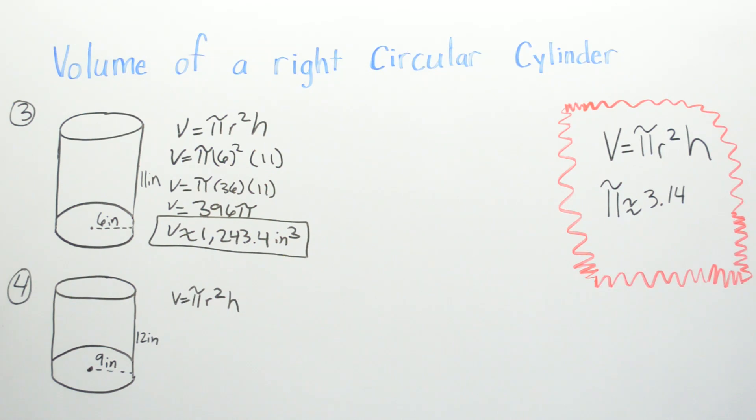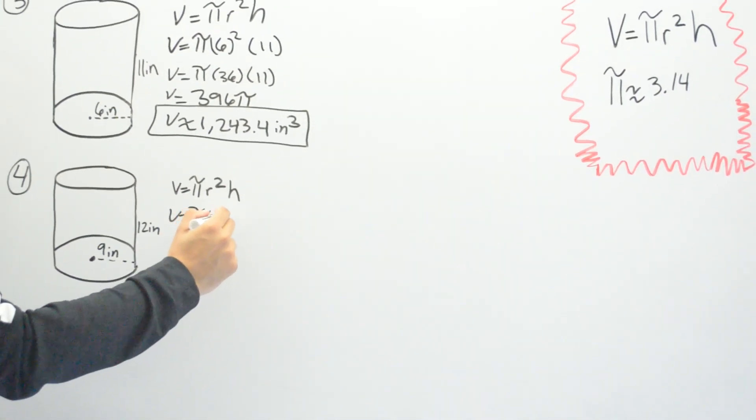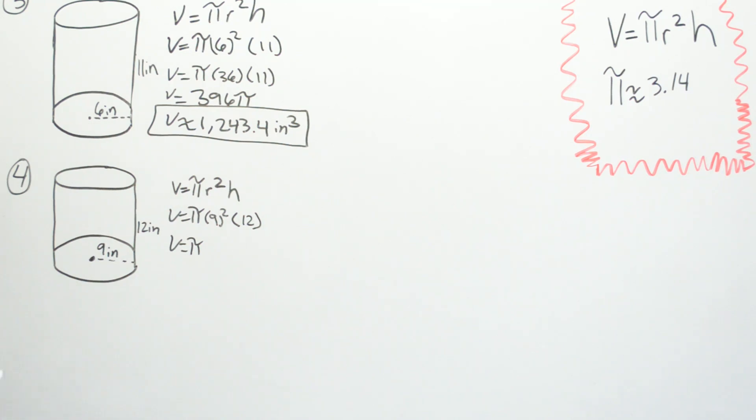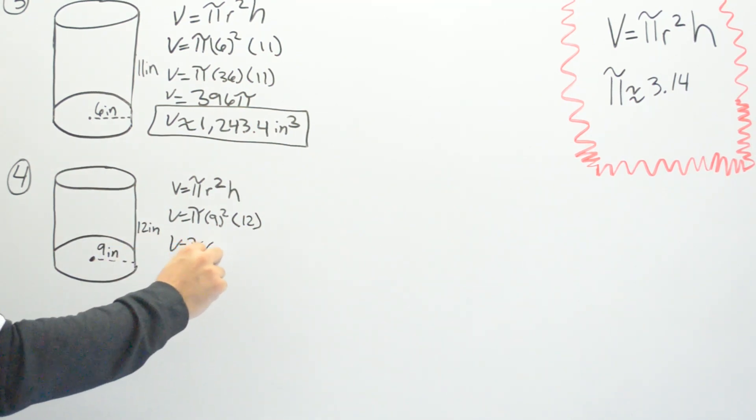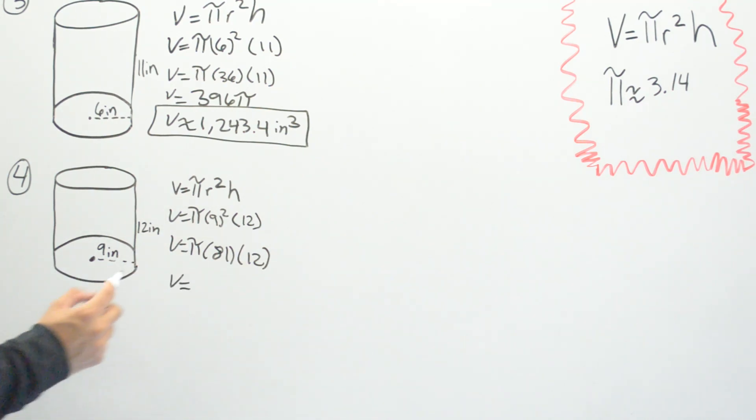And then for number four we go ahead and do the same thing. We'll just plug in the numbers where they go. Radius is going to be 9 squared times our height. Our height is 12 inches. We're going to go ahead and multiply V equals pi. Then 9 times 9 is going to be 81 multiply by 12. Then we're going to go ahead and multiply 81 times 12, and we get 972 pi.